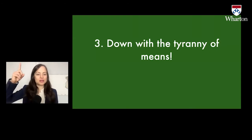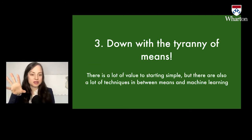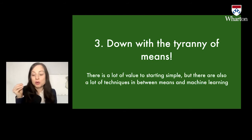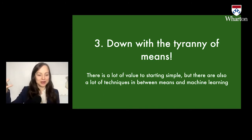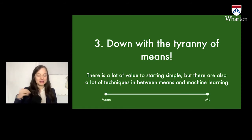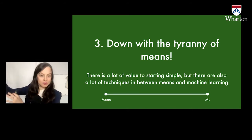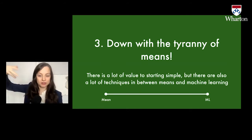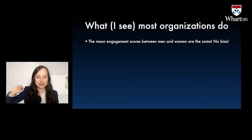Three: down with the tyranny of means. There is a ton of value to starting simple — that's my whole point — but there are also lots of techniques that I see companies miss between the mean and machine learning. A lot of times they say, this is the mean of the engagement data, now let's make a machine learning model — there's a ton in there that we're skipping.